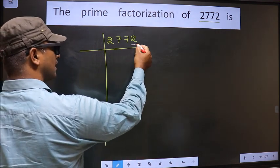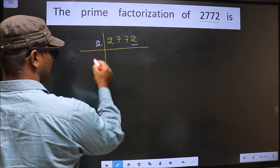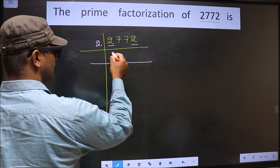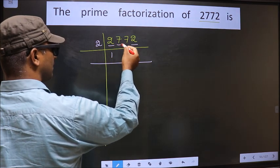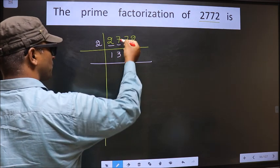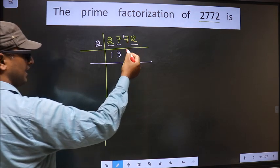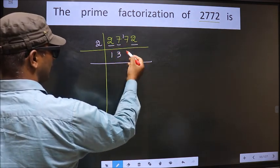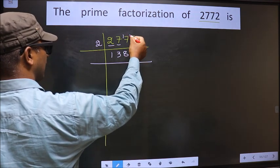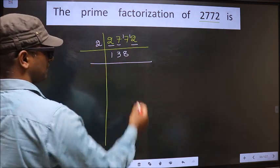For this number, the last digit is 2, which is even, so we take 2 here. The first number is 2; when do we get 2 in the 2 table? 2 ones are 2. The other number 7 — a number close to 7 in the 2 table is 2×6=6. 7 minus 6 is 1, carried forward making it 17. A number close to 17 in the 2 table is 2×8=16. 17 minus 16 is 1, carried forward making it 12. When do we get 12 in the 2 table? 2×6=12.